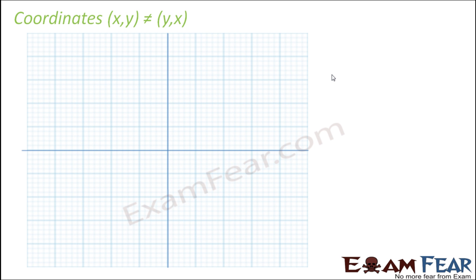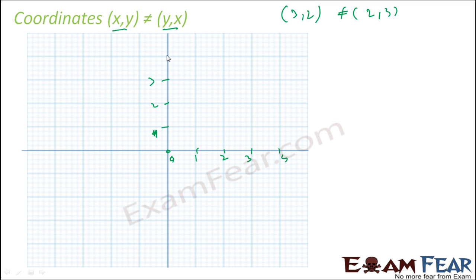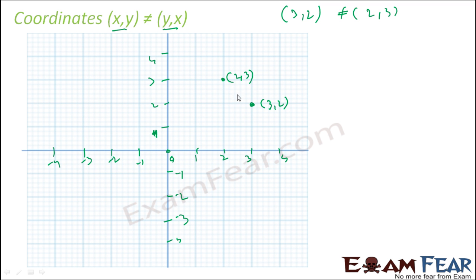One important point: the coordinates (x, y) are not equal to (y, x). For example, 3 comma 2 is not equal to 2 comma 3. If you plot both points you can see they are different positions on the coordinate plane. Order matters when writing coordinates.